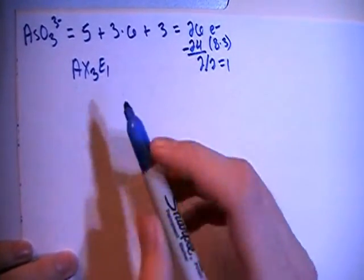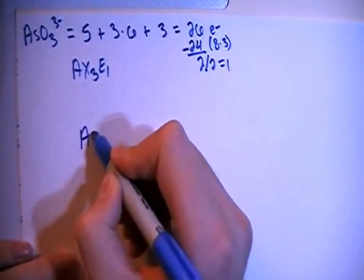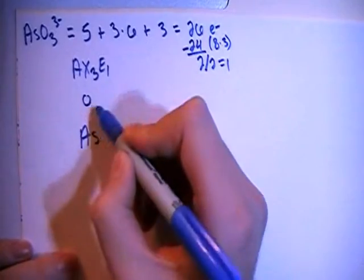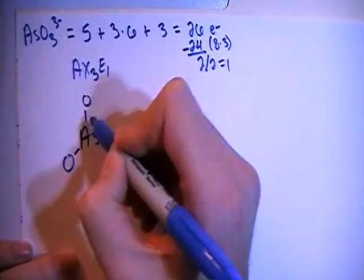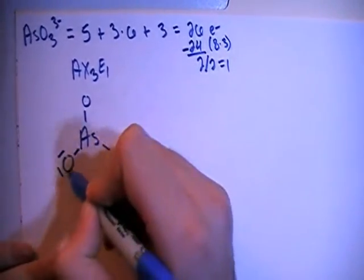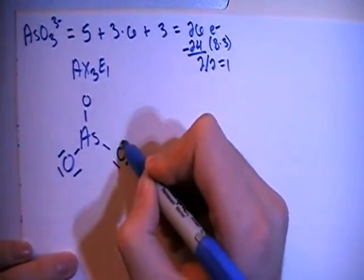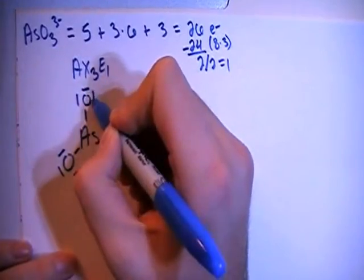Let's go ahead and draw this structure. We have the arsenic in the center surrounded by the 3 oxygens. We can go ahead and single bond all the oxygens to the arsenic, and then fill in the octets for each of the surrounding oxygens. So now all of those have 8 electrons.